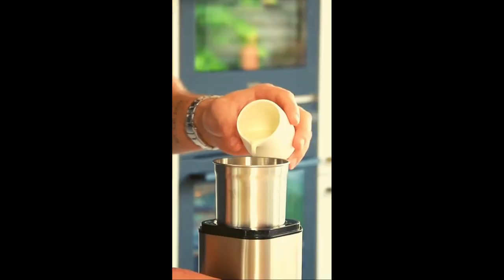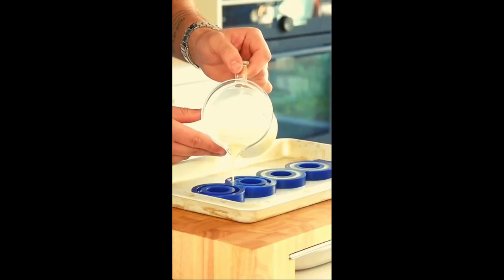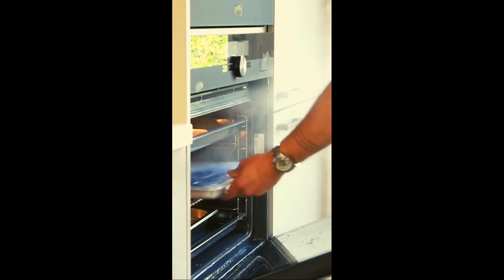Now transfer all the ingredients for the flan into a blender and blend this till smooth. Pour it into a mold, cover it well and steam it at 85 degrees Celsius for 15 minutes. Then let it set in your freezer.